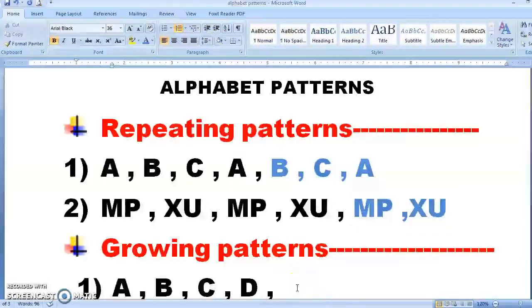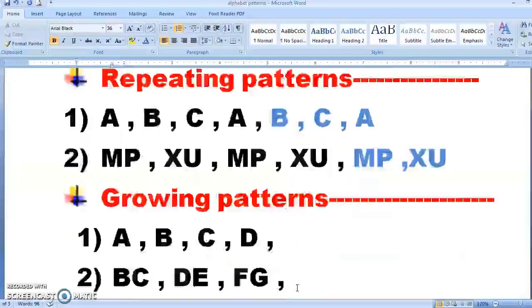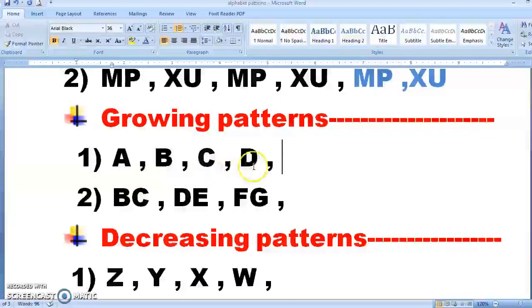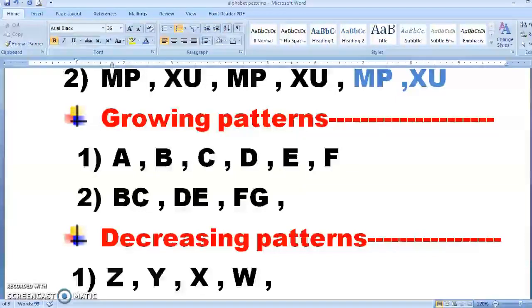Now we go on to growing pattern. As the name suggests, they will keep on growing. Let us take a simple example. A, B, C, D. So after D, I will get E and then F. And this will continue till G, H, I and so on.